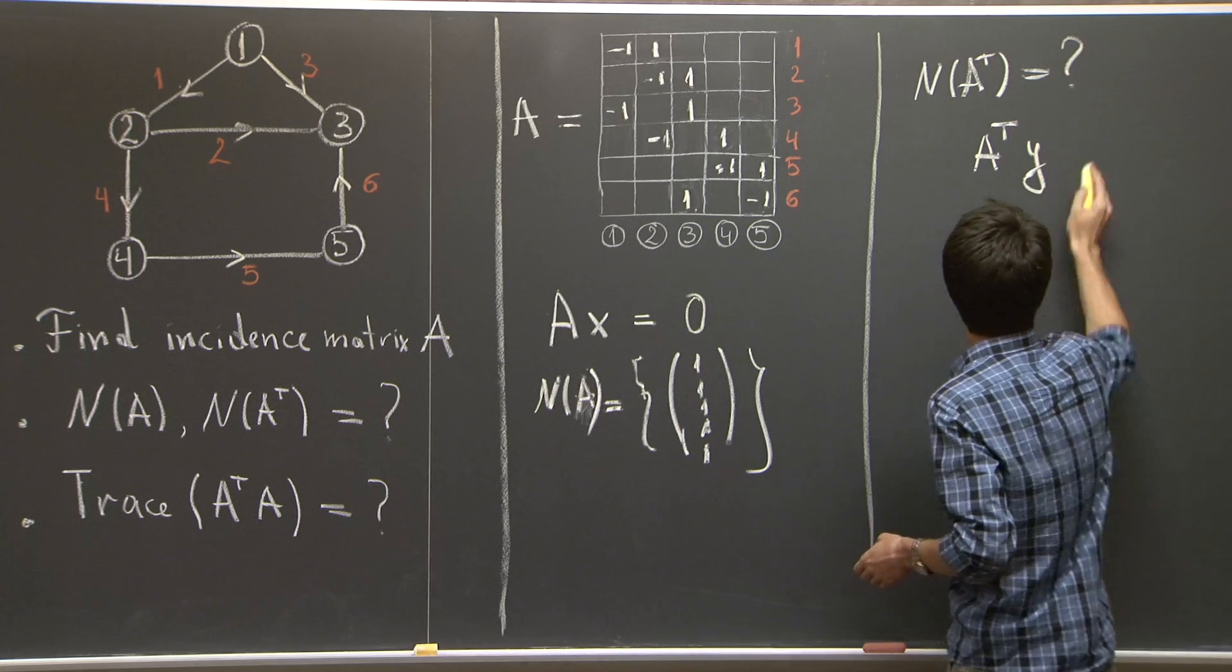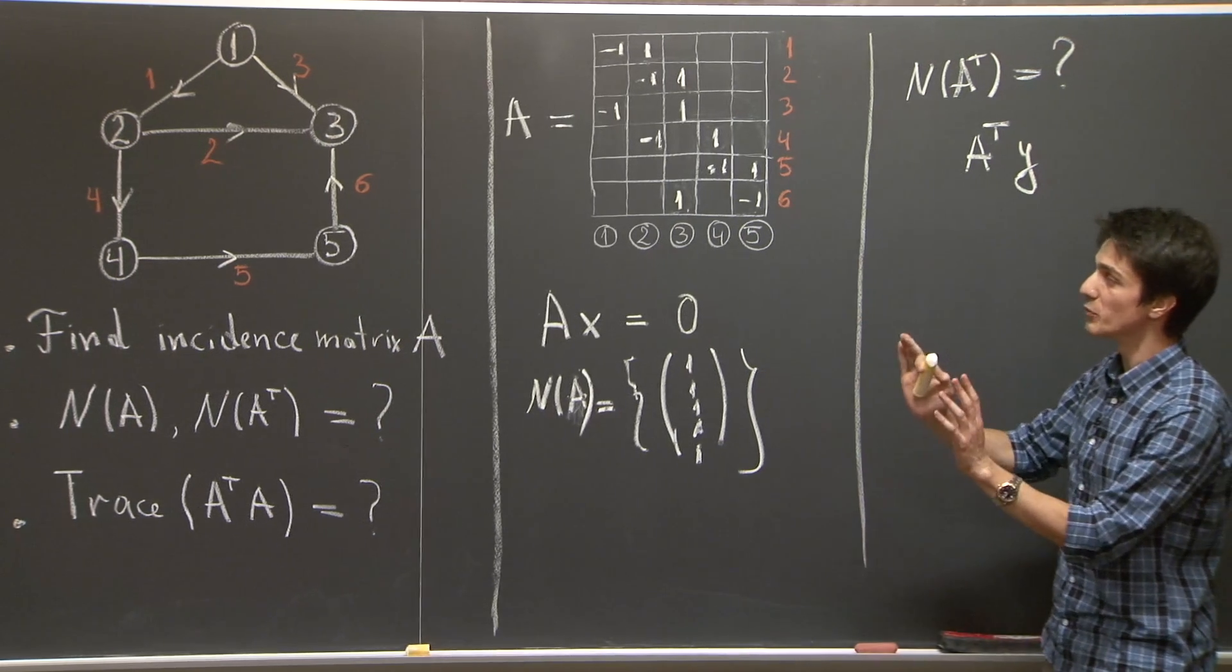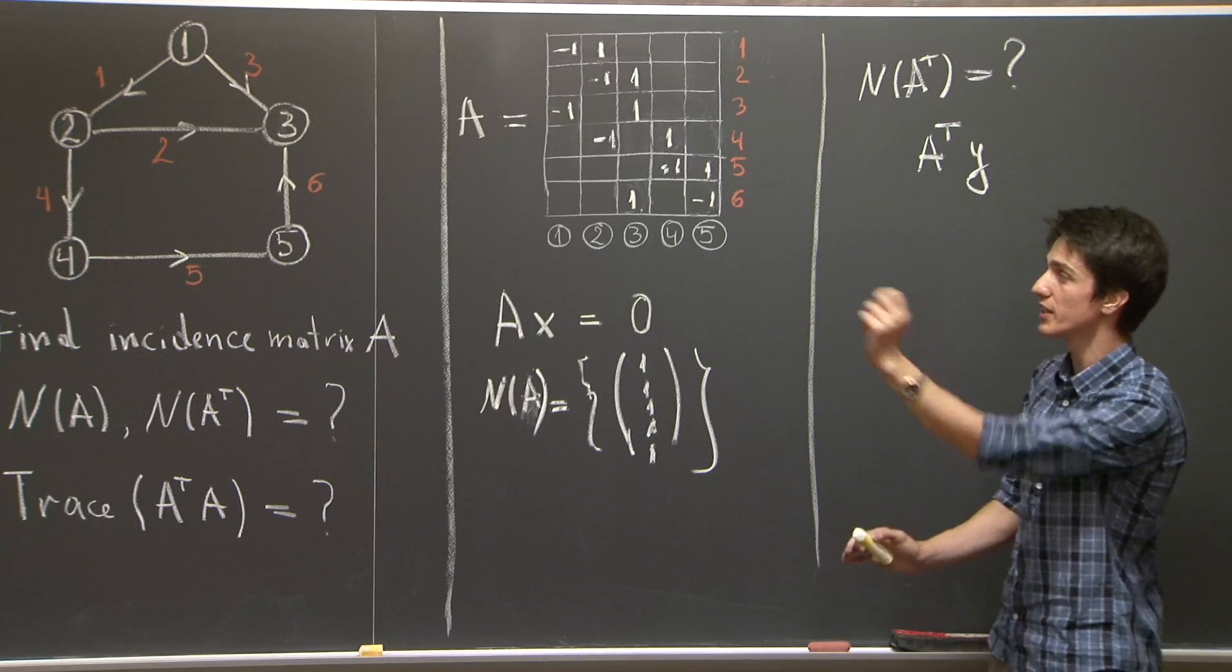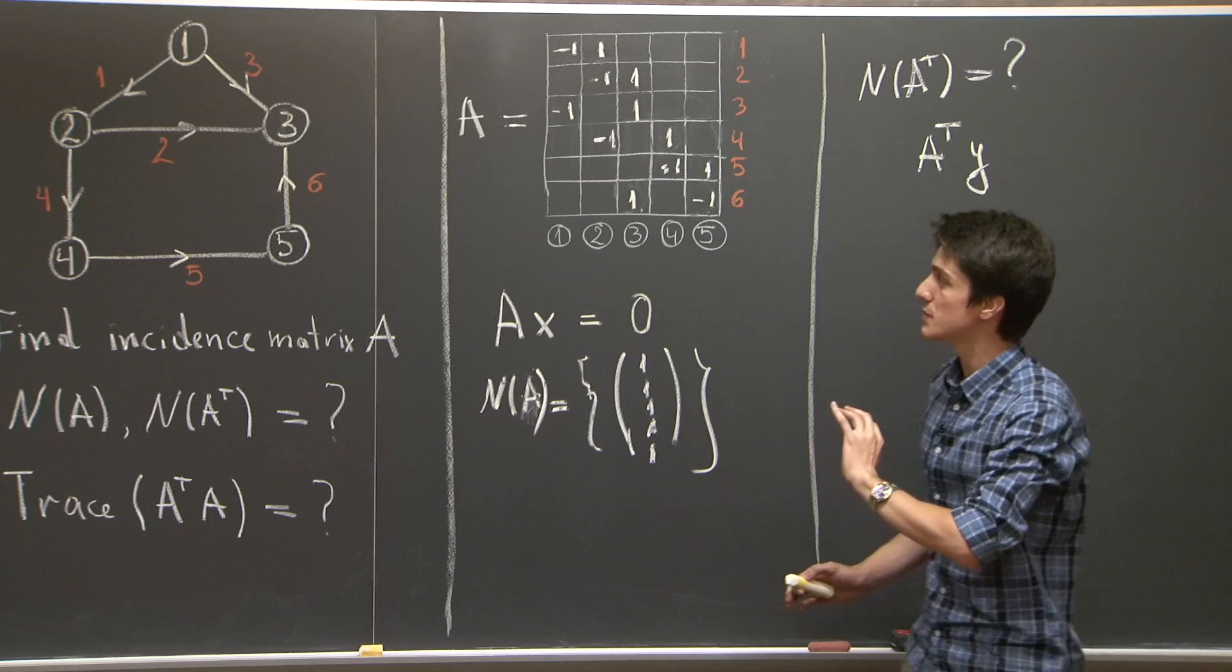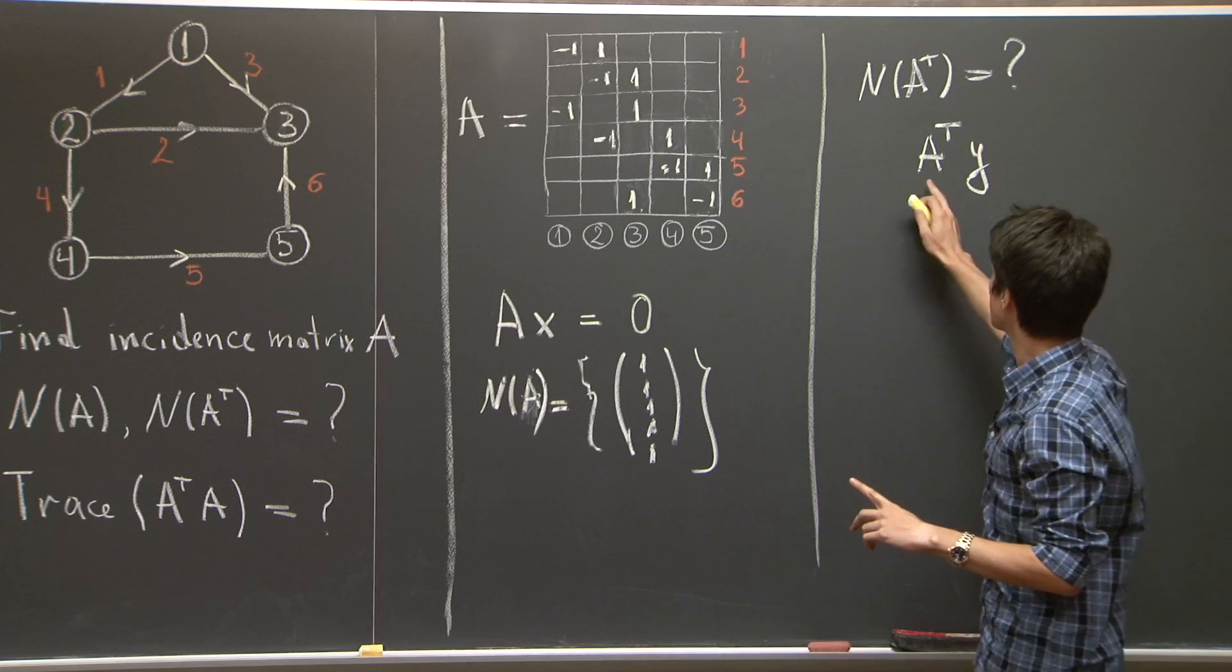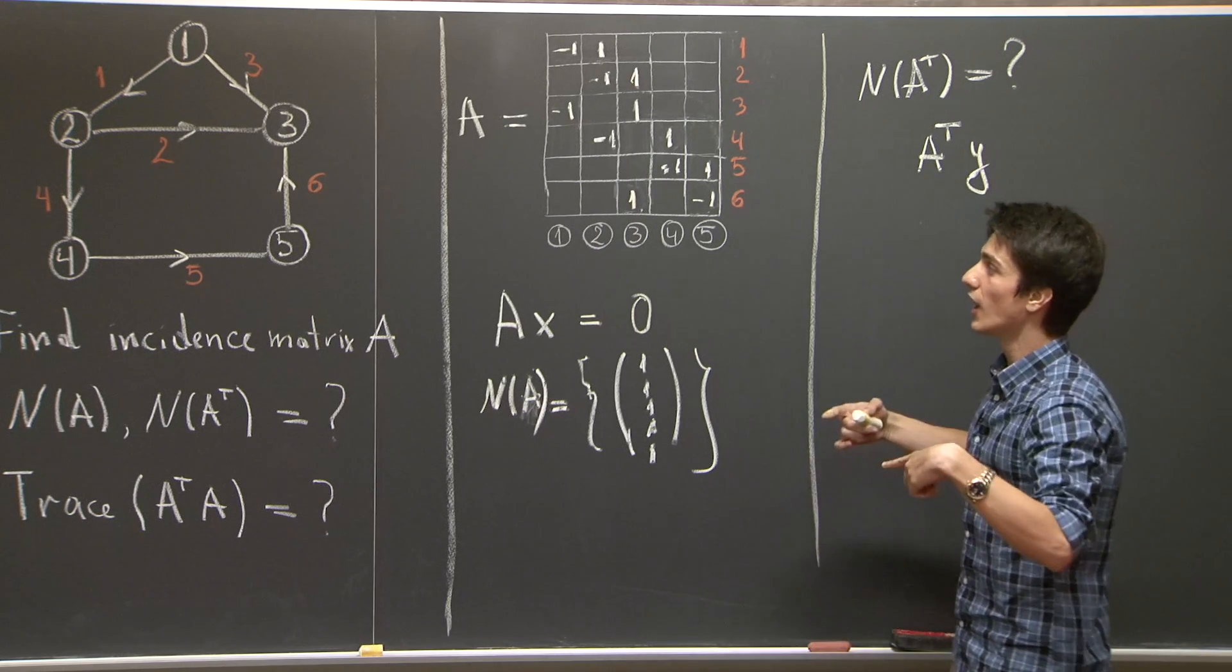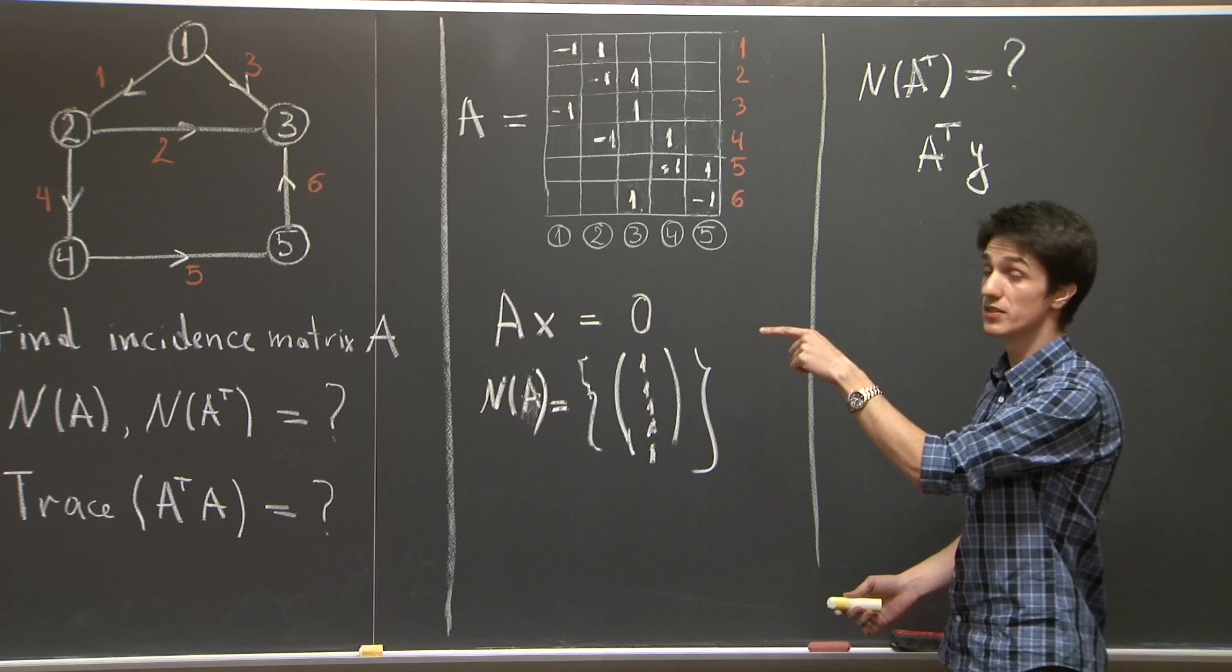then what is A transpose y, where y is a vector with each of whose entry is a current on the edge? Well, it's precisely, the entries of A transpose y are precisely equal to the total current flowing through each of the nodes of the graph.